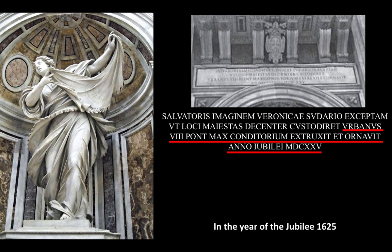Next, we find the conjunction ut, which explains why he did this: Ut loci majestate decenter custodiret — so that the dignity of its situation could adequately preserve. And then we find out what: Salvatoris imaginem — the image of the Savior — Veroniche sudario exceptam — received on the veil of Veronica.